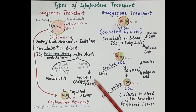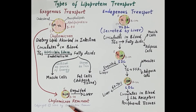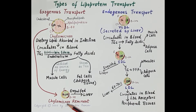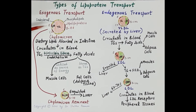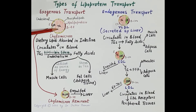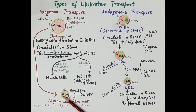In adipose tissue or fat cells, these fatty acids are reconverted into triglycerides and stored. After the breakdown of triglycerides, the chylomicrons shrink in size and are now termed chylomicron remnants. Size reduces from 100–500 nanometers to about 30–50 nanometers. The chylomicron remnant now contains mainly cholesterol esters, shown in green, and a small amount of triglycerides.